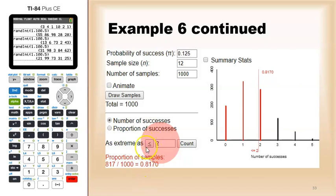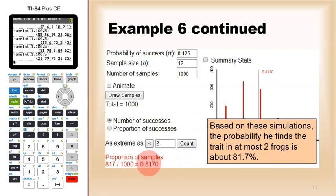Here it's already been done. We set the extreme as we'll need to change the inequality to less than or equal to. So if you just click on it you'll get less than or equal to two, and that's this red part over here. That turns out to be about 82 percent. So based on these simulations, the probability he finds the trait in at most two frogs is about 82 percent.